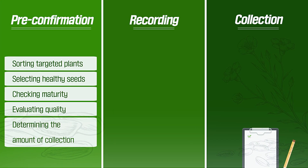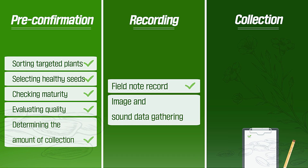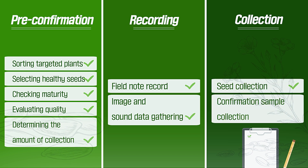Seed collection includes collecting seeds of the targeted species along with confirmation samples, then the recording of field notes and image and sound data, sorting the targeted plants, selecting healthy seeds, checking their maturity, evaluating their quality, and determining the amount of seeds collected.